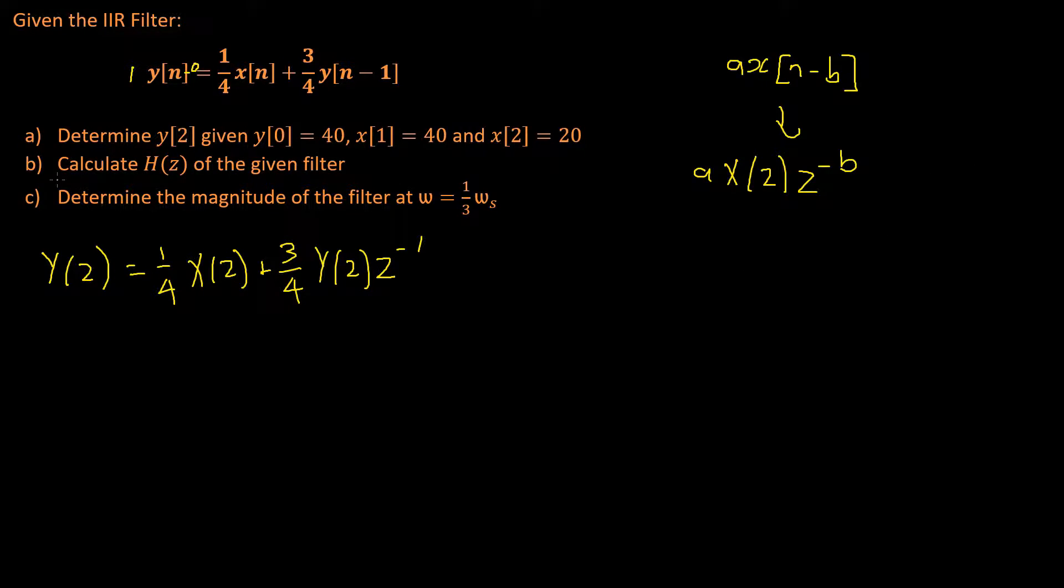Okay, so we have an equation for y of z and x of z. Let's bring all of our y of z terms to the left hand side. That will be y of z, minus, because we'd subtract this from both sides, 3 quarters y of z times z to the power of negative 1, is equal to 1 quarter x of z.